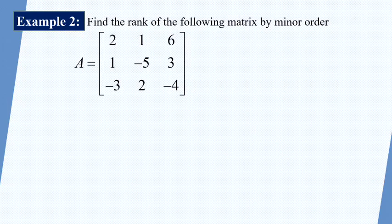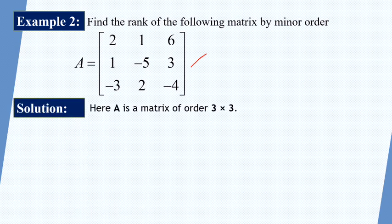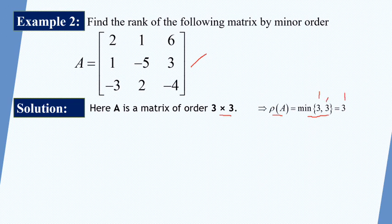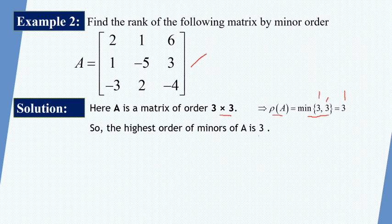Example 2: find the rank of the following matrix by the minor method. The matrix is [2, 1, 6; 1, −5, 3; −3, 2, −4], which is a 3 by 3 matrix. So rho A equals the minimum of 3 and 3, which is 3. The highest order of minor of A is 3, so the rank will be 3 or less than 3.